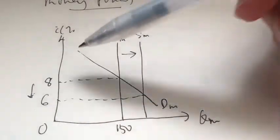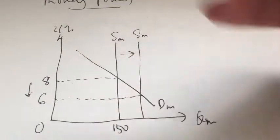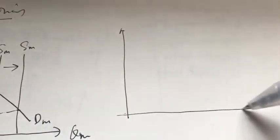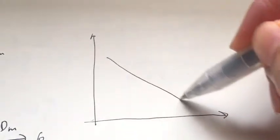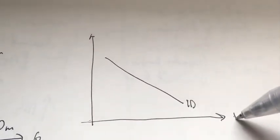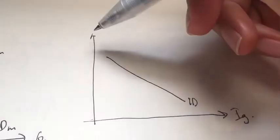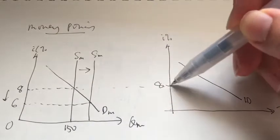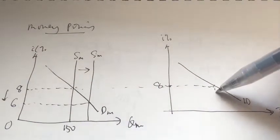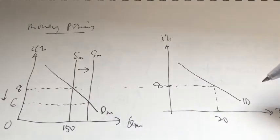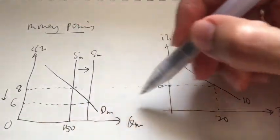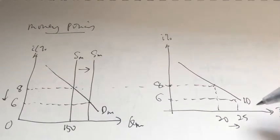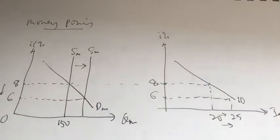So how will this affect anything? Remember, interest rate is a determinant that affects investment because it is the cost of borrowing. Here we can sketch our investment demand curve, which is downward sloping. Initially, when our interest rate was at 8%, the amount of investment was 20 billion. Now that the interest rate is lowered to 6%, the amount invested would be more because the cost of borrowing is cheaper — say it rises to 25 billion. So there's an increase of gross investment (IG) by 5 billion.